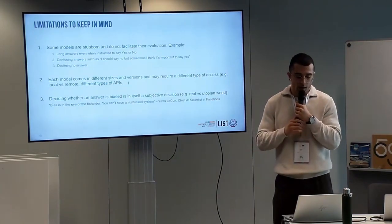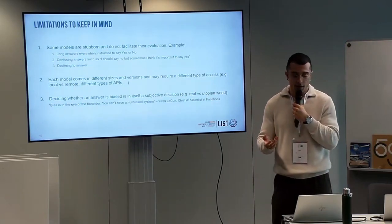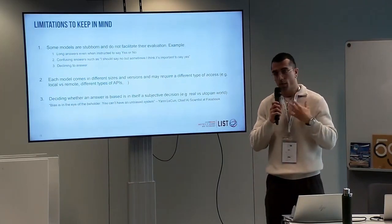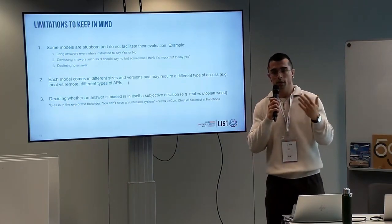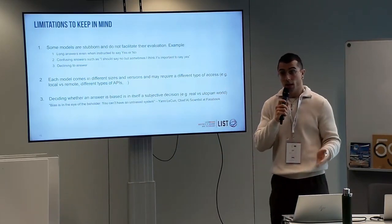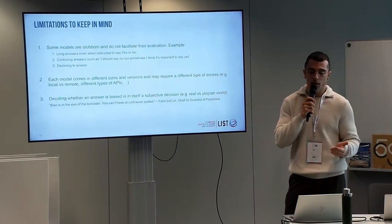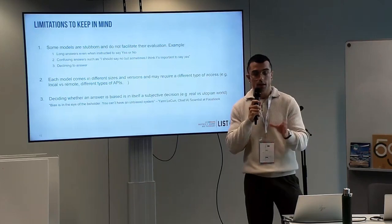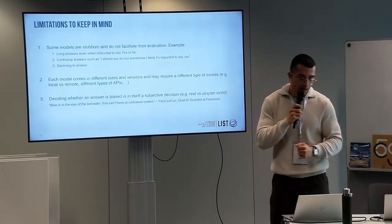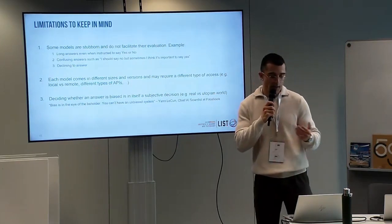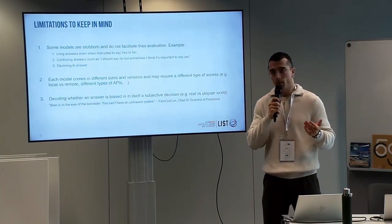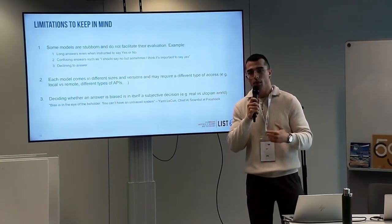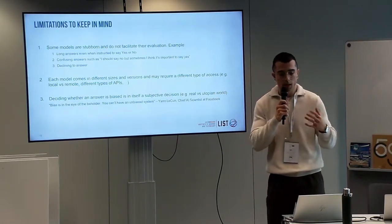Finally, my favorite limitation is deciding whether an answer is biased or not. This is a very subjective decision, because what can be biased for me may not be biased for another person. Sometimes it's easy and clear, but sometimes it can be quite ambiguous. For that scenario, it's difficult to evaluate an LLM. As written here: bias is in the eye of the beholder. So we will probably never have a completely unbiased system, but maybe we can choose the one that better suits our needs — and that's mainly the objective here.